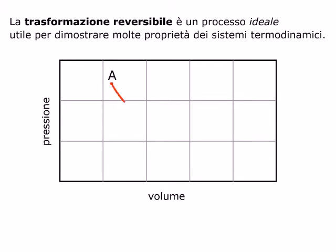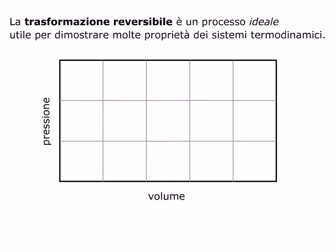Nell'andare da A a B il sistema modifica l'ambiente, scambiando energia con le diverse sorgenti di calore utilizzate. Ma nel processo inverso, ogni sorgente che aveva ceduto calore ne riceve indietro la stessa quantità, e viceversa ogni sorgente che aveva assorbito calore ne cede la stessa quantità. Alla fine della trasformazione BA, insomma, tutto è tornato come se la trasformazione AB non fosse mai avvenuta.